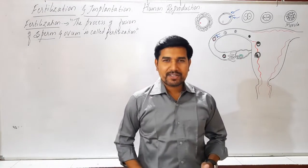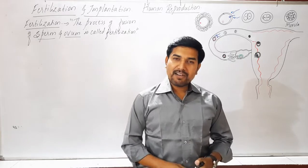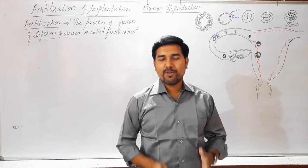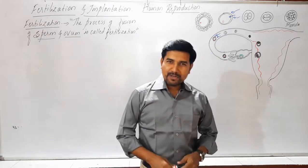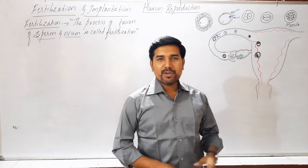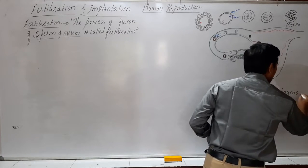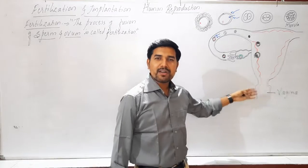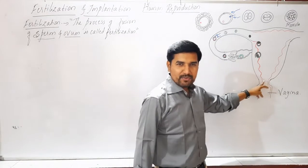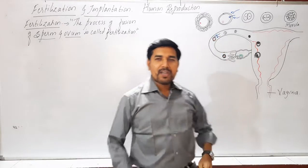Fertilization occurs in the female reproductive system, as humans have internal fertilization. During copulation or the sexual act, the male releases semen through the male genitalia into the female reproductive tract — the vagina — into which the sperms are inseminated or released. After release in the vagina, the sperms enter through the cervix, a narrow passage, into the uterus, and then travel into the fallopian tube.